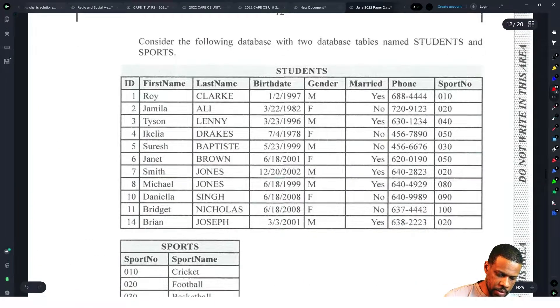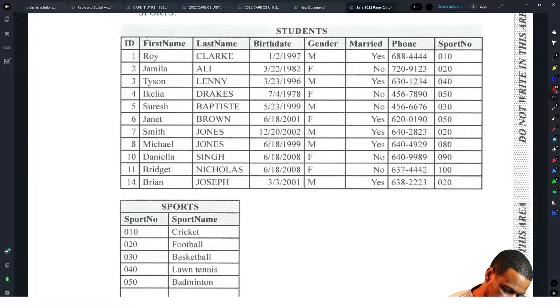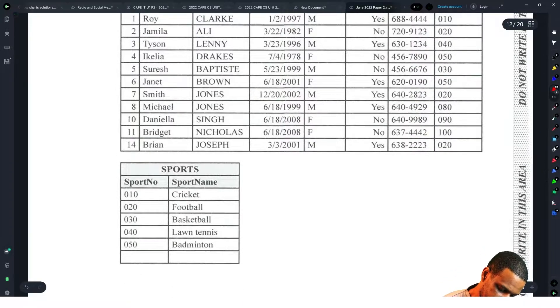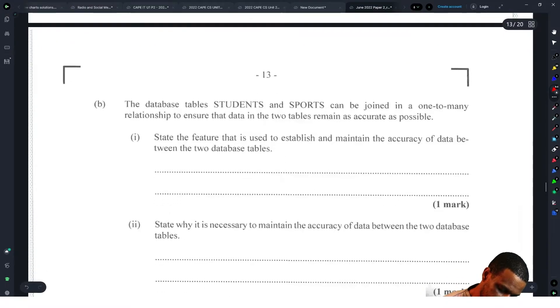Consider the following database with two database tables named Students and Sports. The database tables Students and Sports can be joined in a one-to-many relationship to ensure that data in the two tables remain as accurate as possible. State the feature used to establish and maintain accuracy - this is referential integrity.